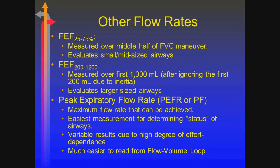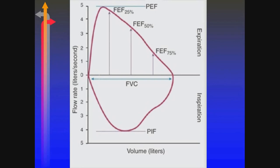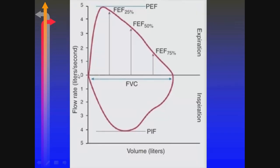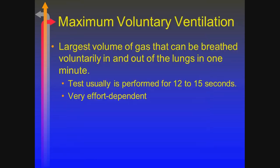Although FEV1 is probably a better index because peak flow is very effort dependent. You should be able to tell peak flow, both expiratory and inspiratory, from the flow-volume loop. You should know how to calculate between liters per second and liters per minute — just multiply by 60. MVV is basically a test we do for 12 to 15 seconds, having somebody breathe as fast and as deep as they can, and from that we extrapolate what it would be over a minute.